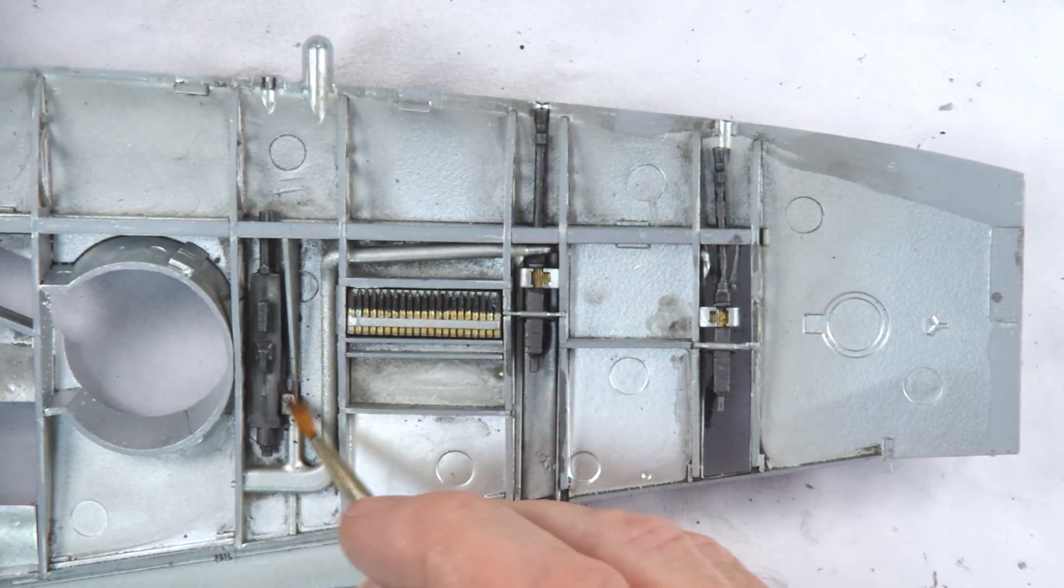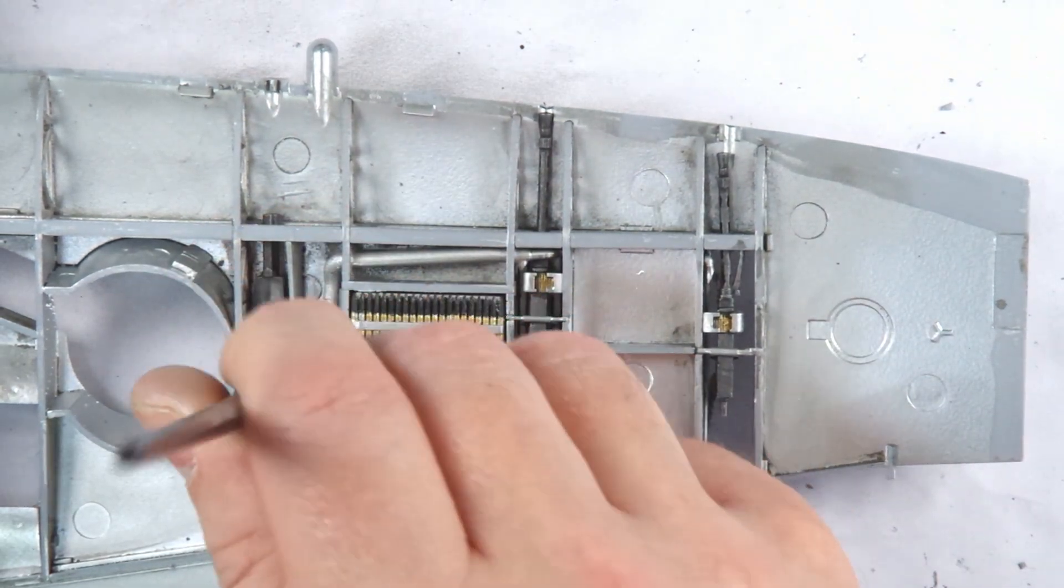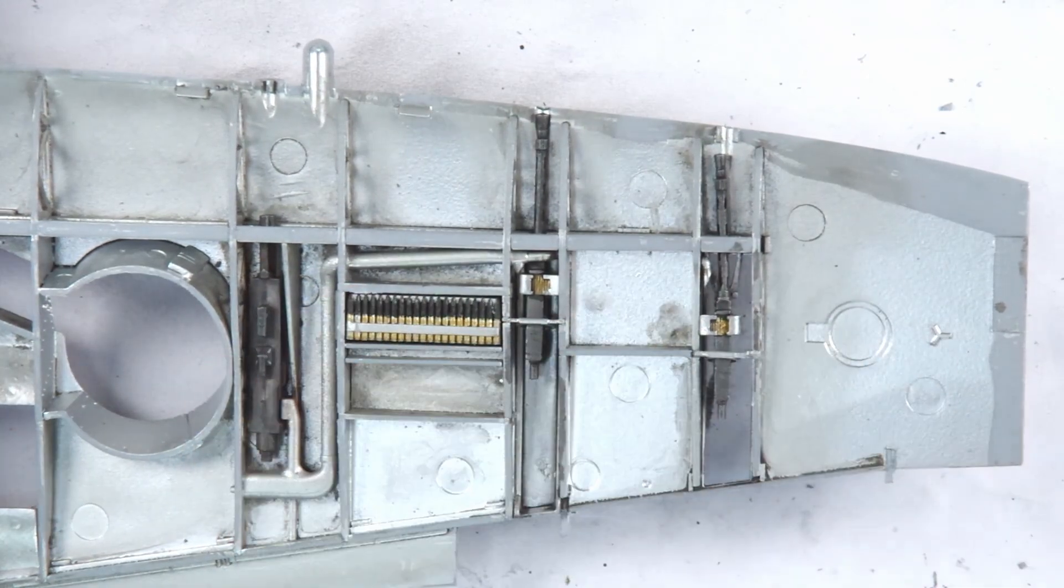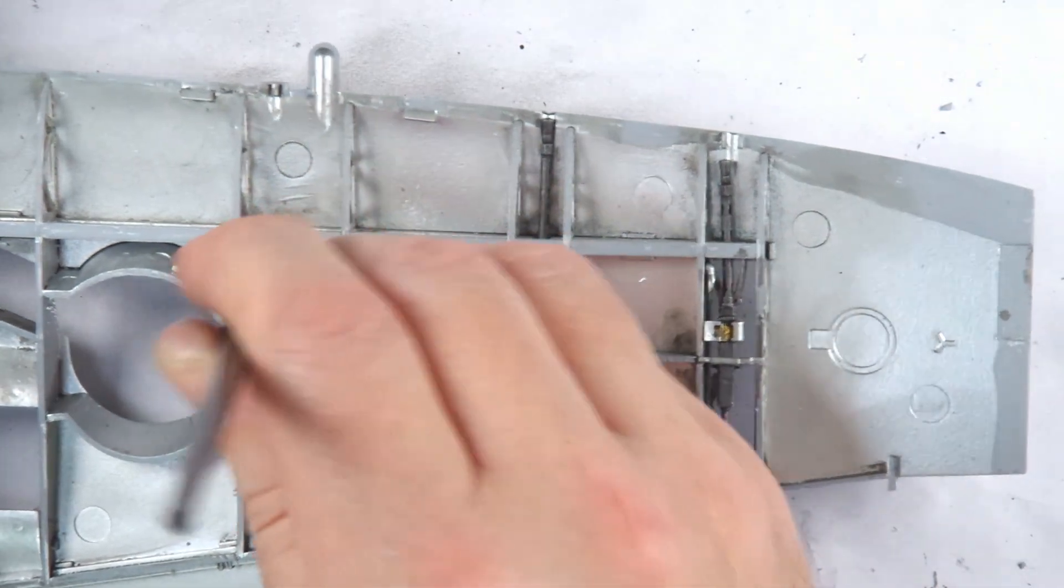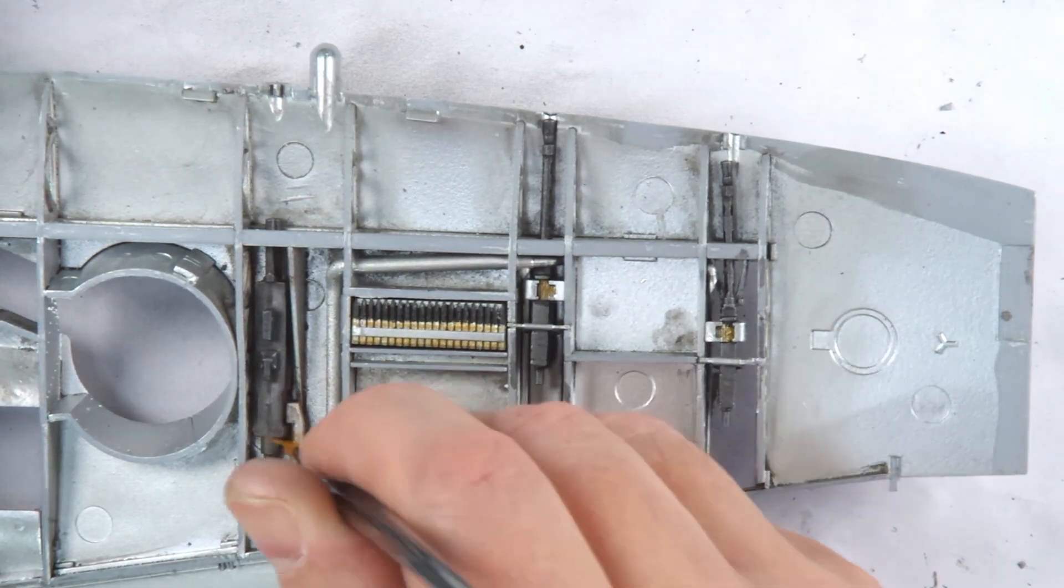With these in position, it was time for some weathering in the gun bays. Although there were extraction systems for the gun smoke, these were far from perfect and these areas would have gotten dirty. I wanted to weather them in situ to tie all the components together. I used my homemade dark brown weathering powders to create these effects.